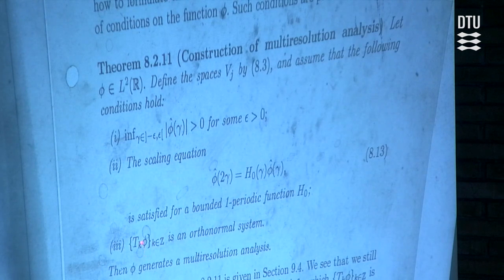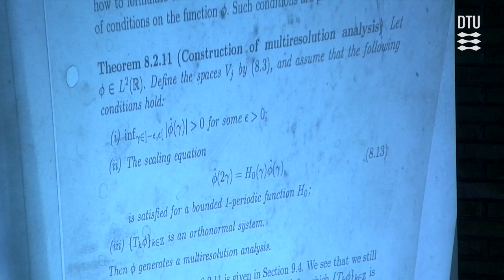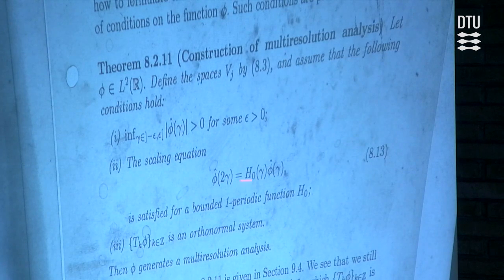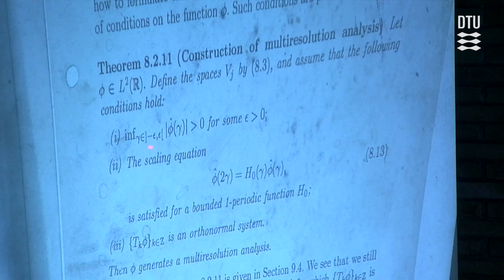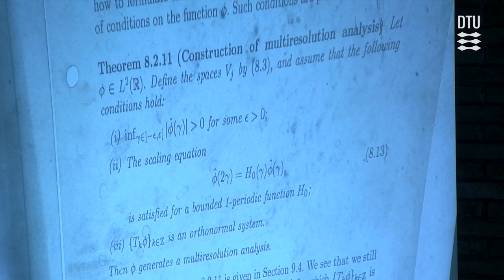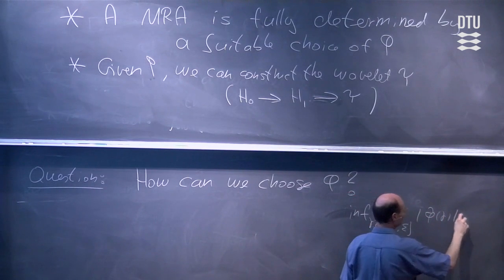The second condition is that when we look at the translates of φ, they need to form an orthonormal system. So we need to take inner products of the elements T_k φ with other elements T_j φ and show that we get 1 if k equals j and 0 otherwise. We know these two conditions very well. The third one is somehow new to us: if we look at the Fourier transform of φ, then in a small ε-neighborhood around zero, this function has to take values that are away from zero. So the infimum of |φ̂(γ)| for γ in (−ε, ε) should be positive.